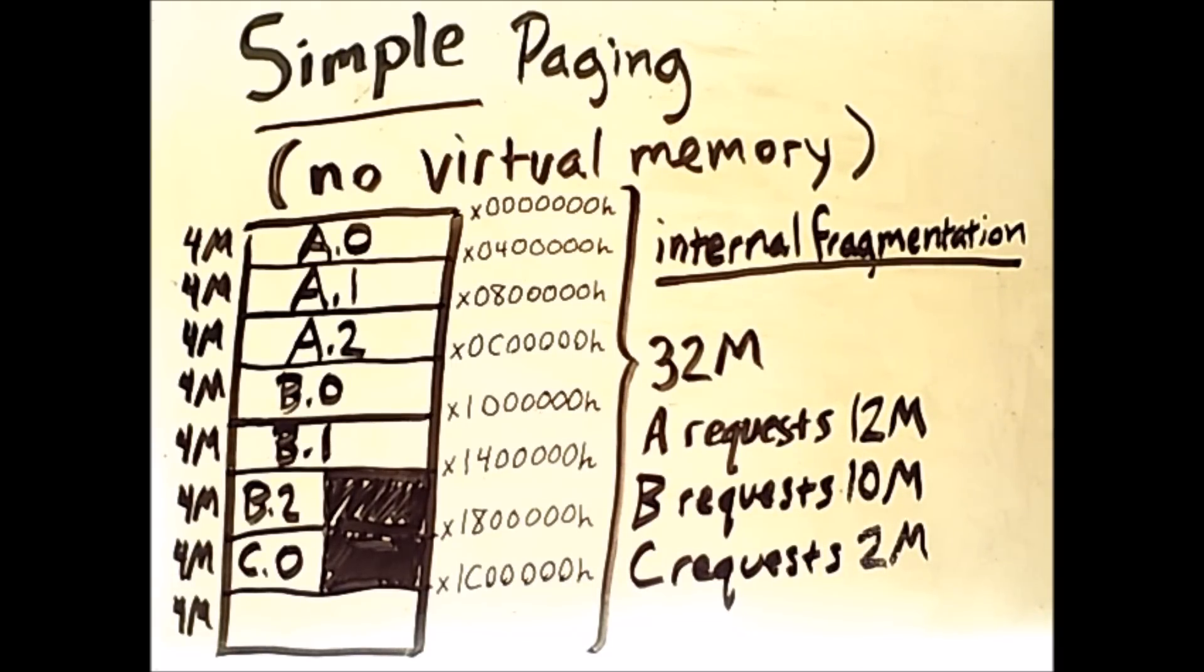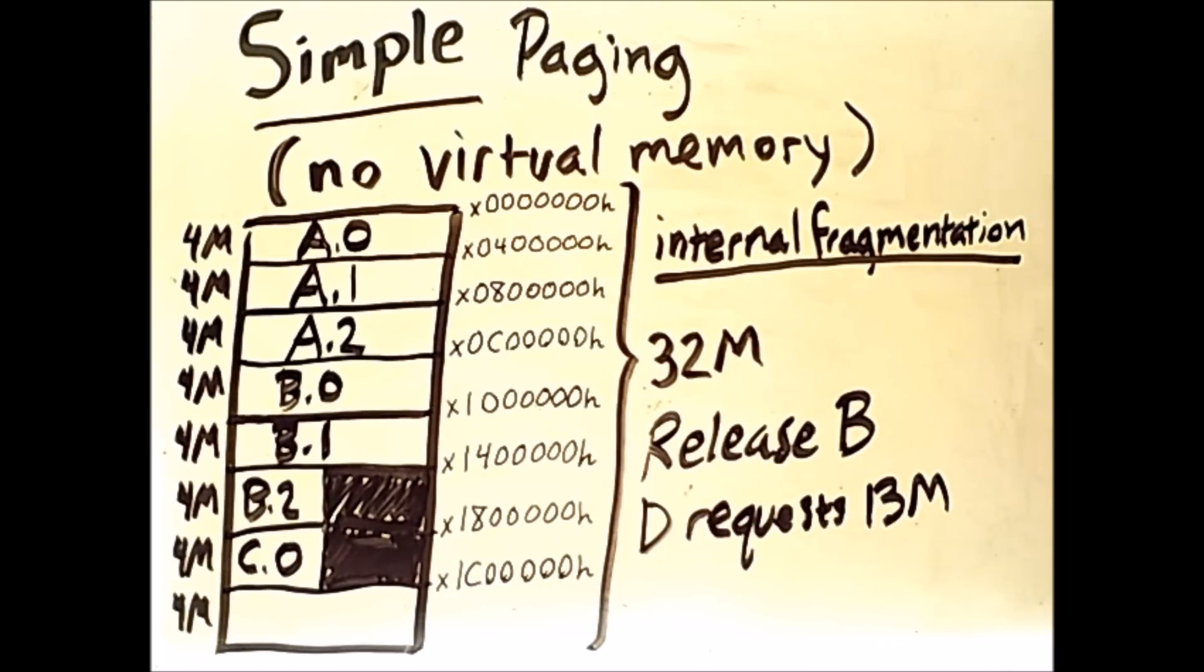Now, where paging gets interesting is when processes get vacated, or released, and replaced with others. So we will now do the following actions. The next two actions we will carry out are to release process B from memory, and then a new process D will request 13 megabytes. So when B is released, we simply erase the frames that it occupies, like so.